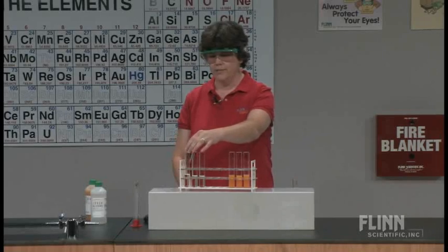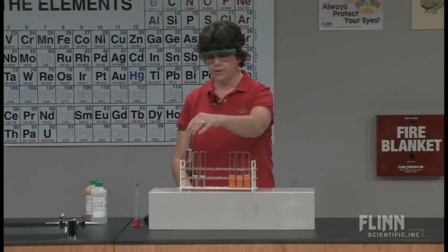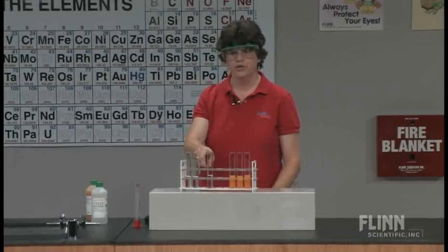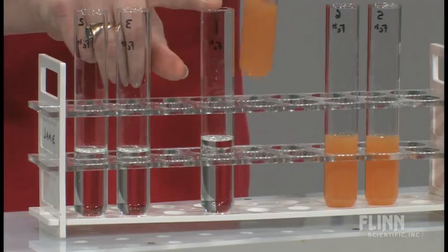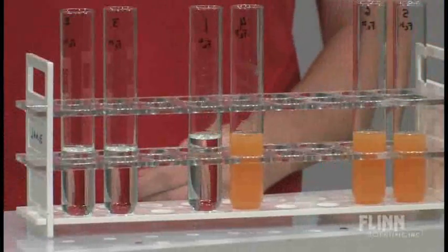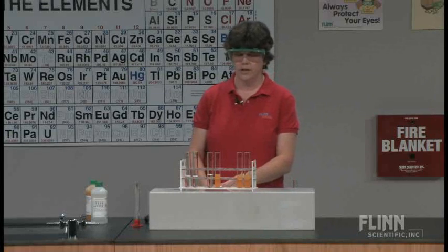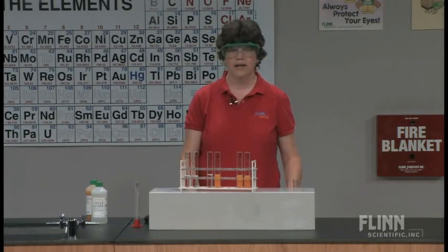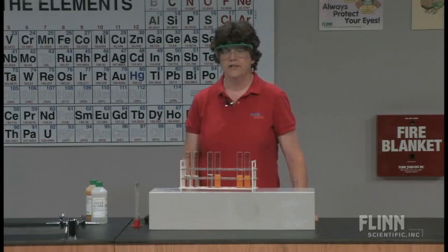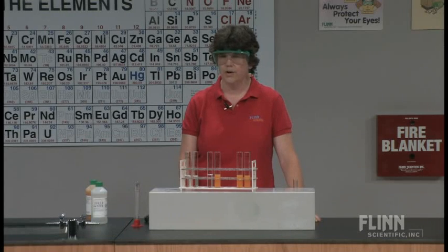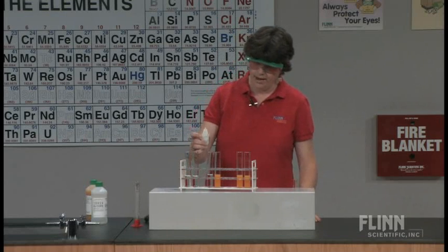So in test tube number one, which I'm going to move to the middle here so we can have some comparison, I have already my iron two sulfate and I have my iron three sulfate in test tube number four, so we're looking at the two in the middle here. And to those I'm going to add some potassium ferrocyanide. Now ferrocyanide says that there are two plus ions, two plus iron ions attached to a cyanide in a complex ion formation. So if I add five drops.